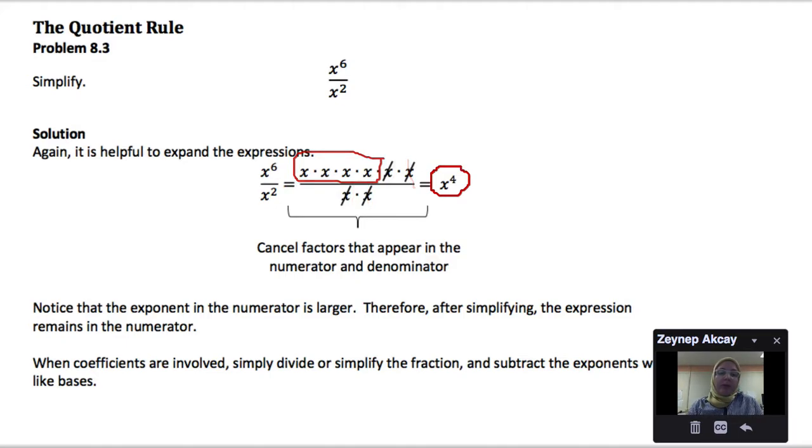What we can realize is that we had 6 factors in the numerator and 2 factors in the denominator, so 4 is simply their difference. Realize that the numerator exponent is larger, therefore after simplifying, the expression remains in the numerator.